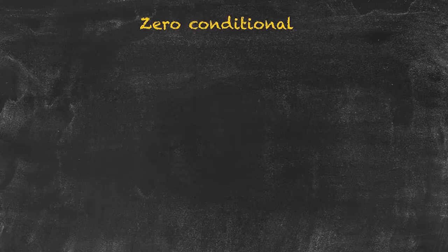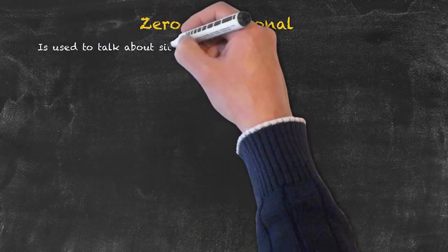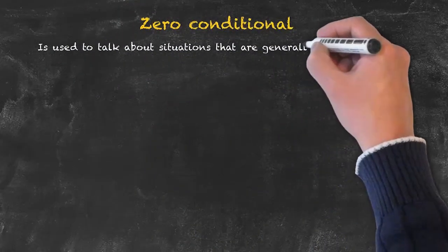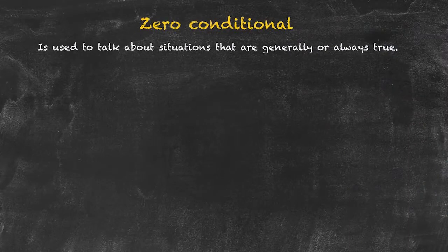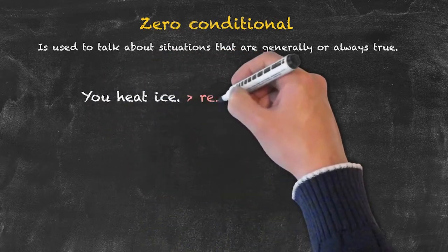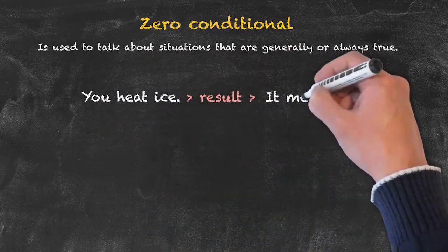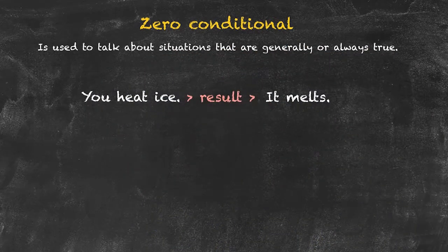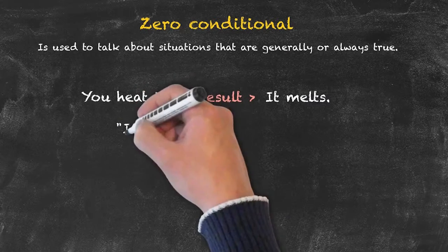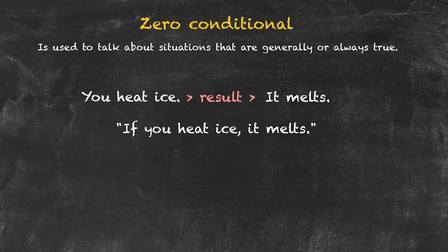Let's start by having a look at the zero conditional. The zero conditional is used to talk about situations that are generally or always true, such as scientific facts. What's the result of heating ice? It melts. How can we put this in a sentence? The sentence could be: if you heat ice, it melts.